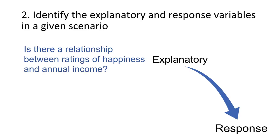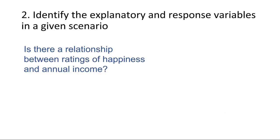Is there a relationship between ratings of happiness and annual income? In this case, we're not using one variable to predict another. We don't have an explanatory or response variable when we're examining a relationship between two variables, as opposed to using one to predict the other. We don't need to label the variables as explanatory and response. This is a scenario where we would compute a correlation. Recall that in correlation, r of x and y equals r of y and x — the x and y variables are interchangeable.